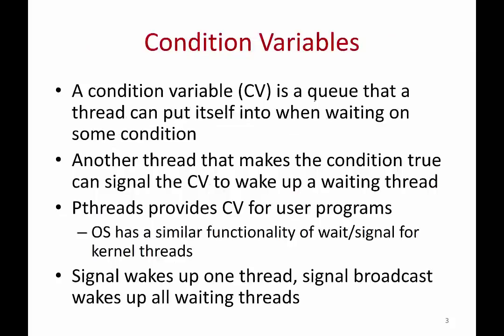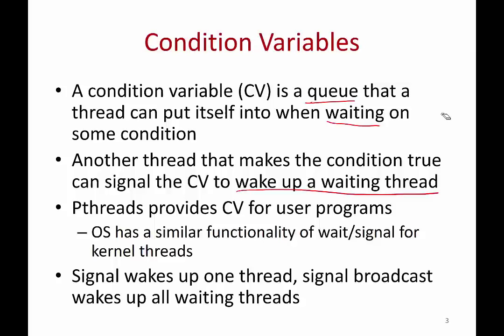So what is a condition variable? A condition variable is a queue into which a thread can put itself. Suppose there is a certain condition that needs to be true — one thread can check that condition, and if the condition is false it can simply put itself into the queue and wait. When another thread makes that condition true, it can wake up the waiting thread by calling signal on the condition variable. So a condition variable is a way for threads to wait and wake up.